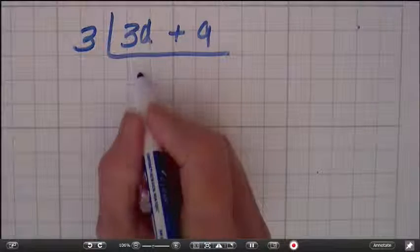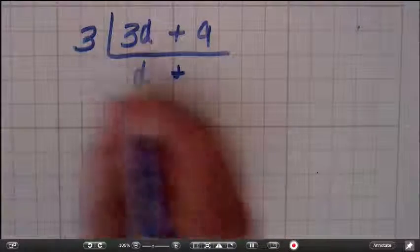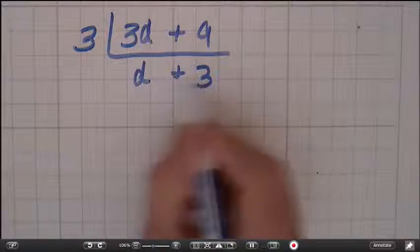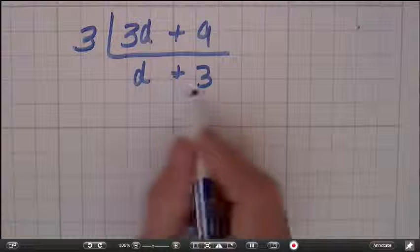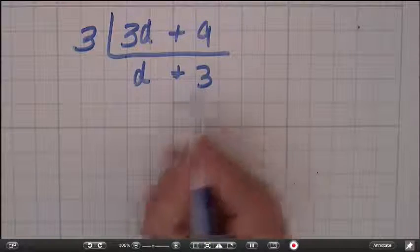3 divided by 3 is 1, so that's just d. And 9 divided by 3 is 3. Now I look at this. There's not a variable in this one, so I'm done.